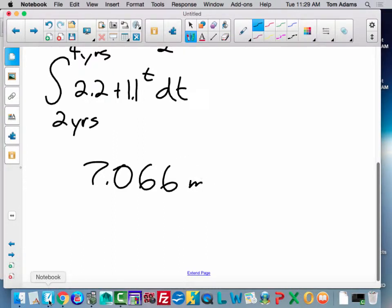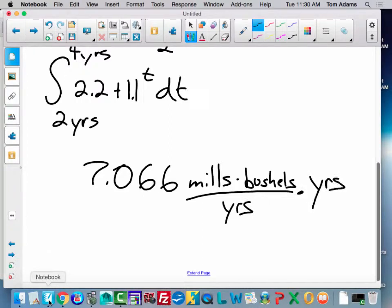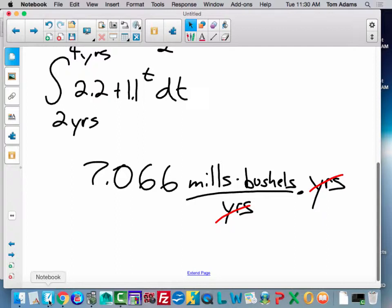millions of mills times bushels per year. And then we have what? Times years. Does that work out? Yes. Is that the correct answer? Yeah. Yeah.